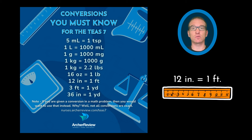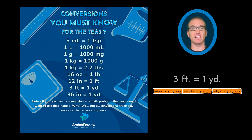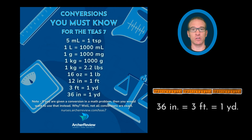12 inches equals one foot — a traditional ruler is 12 inches, that's one foot. Three of those feet give you one yard. And if you do a little bit of math, 36 inches will give you one yard.